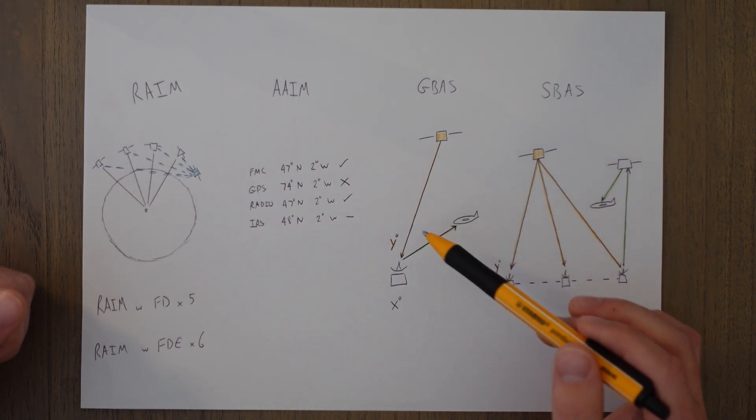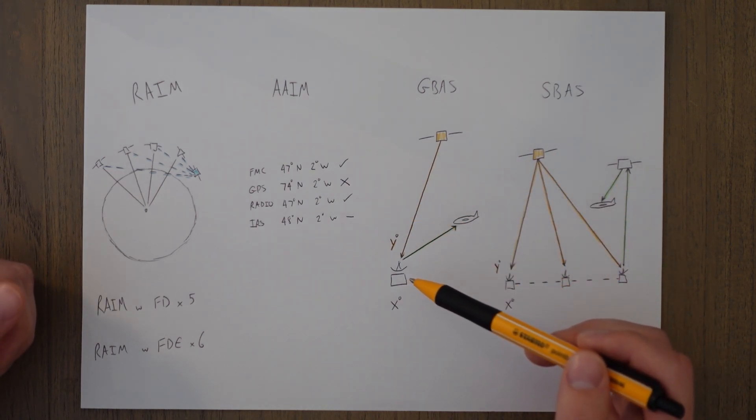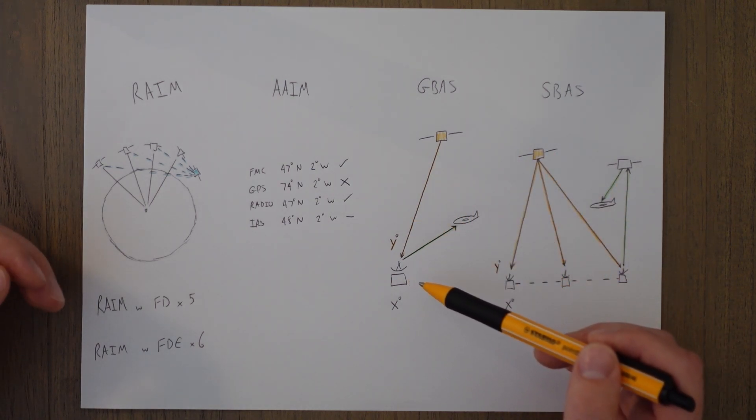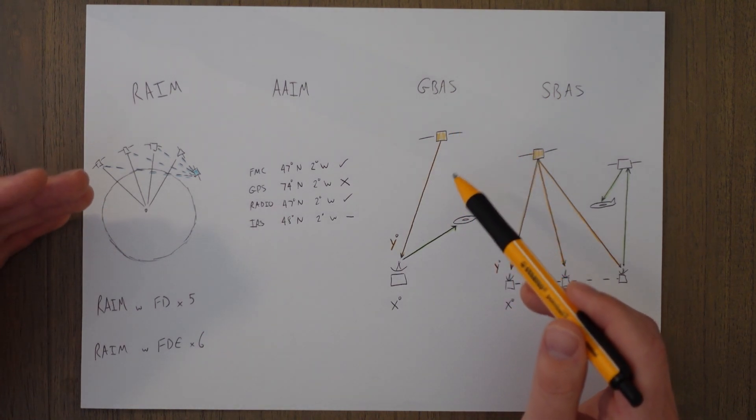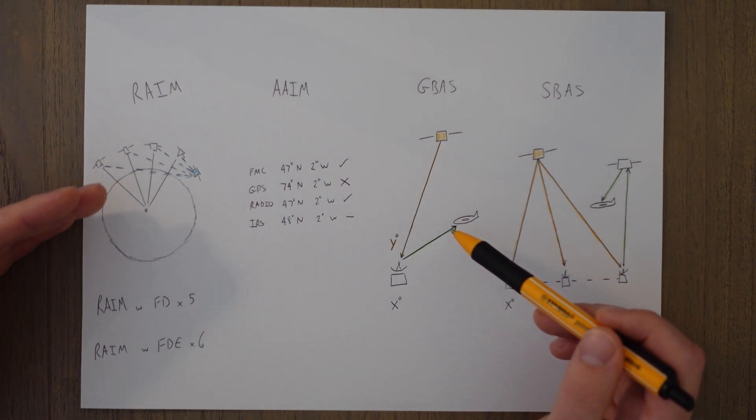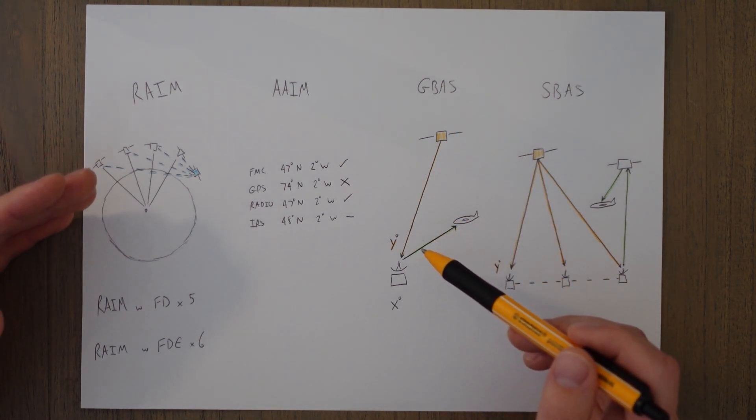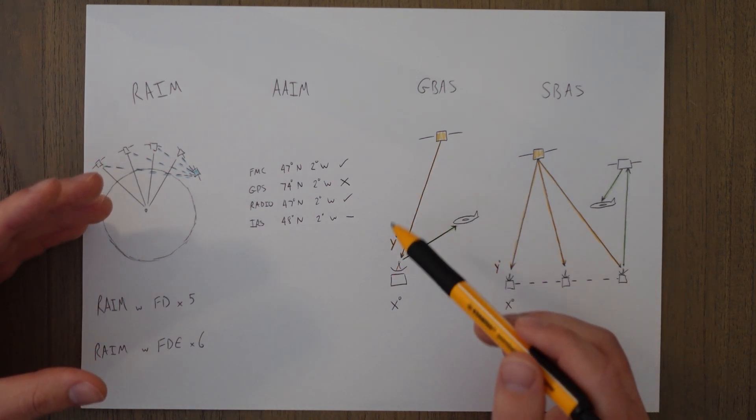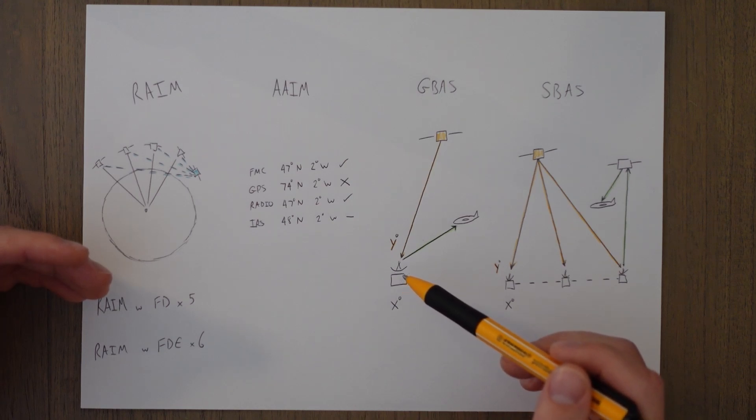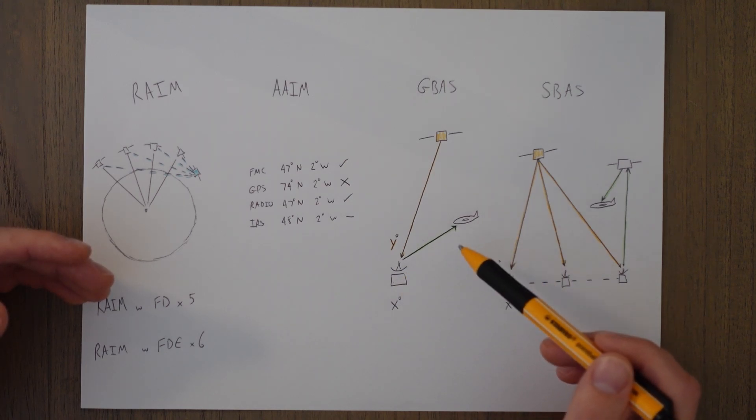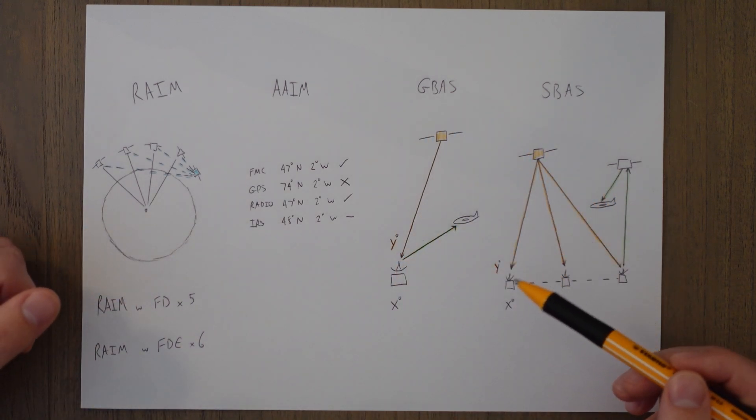A ground-based augmentation system uses a fixed ground station with known latitude and longitude coordinates. It will then take a fix from the GPS system and say yep that's spot on or no there is a bit of an error here this is the error that we need to apply to aircraft in this area and it will send out that correction signal over a VHF frequency to an aircraft within about 20 nautical mile range.